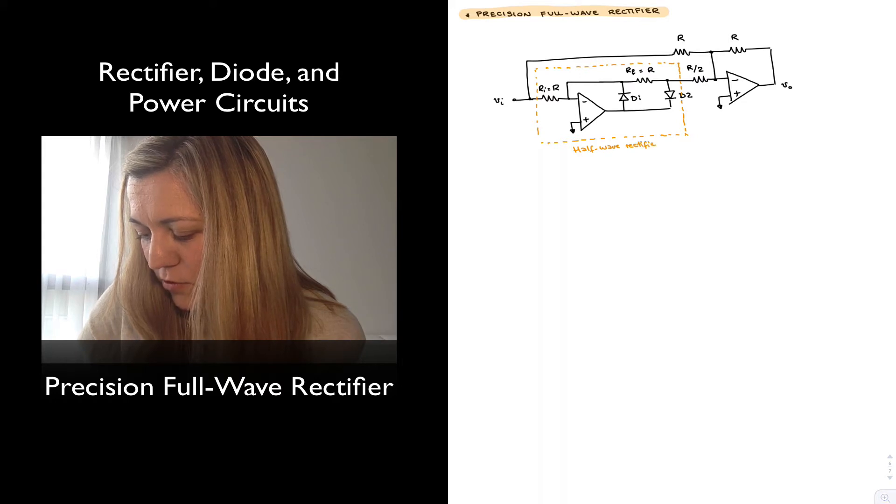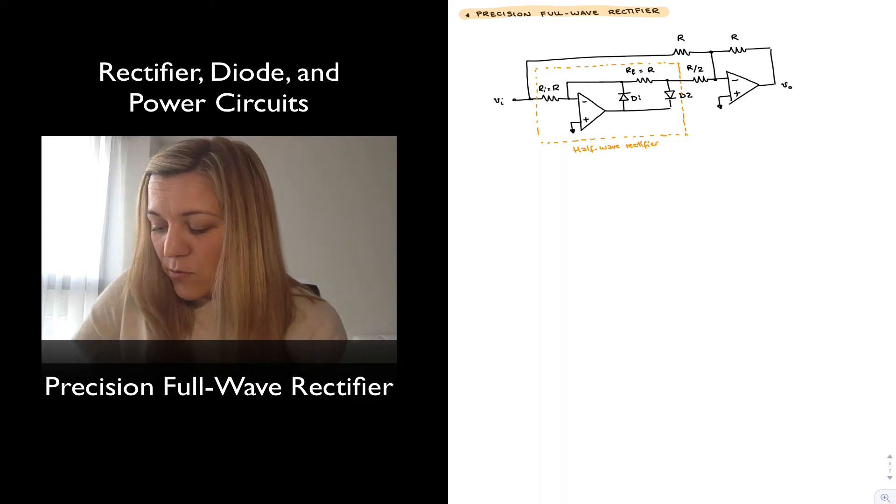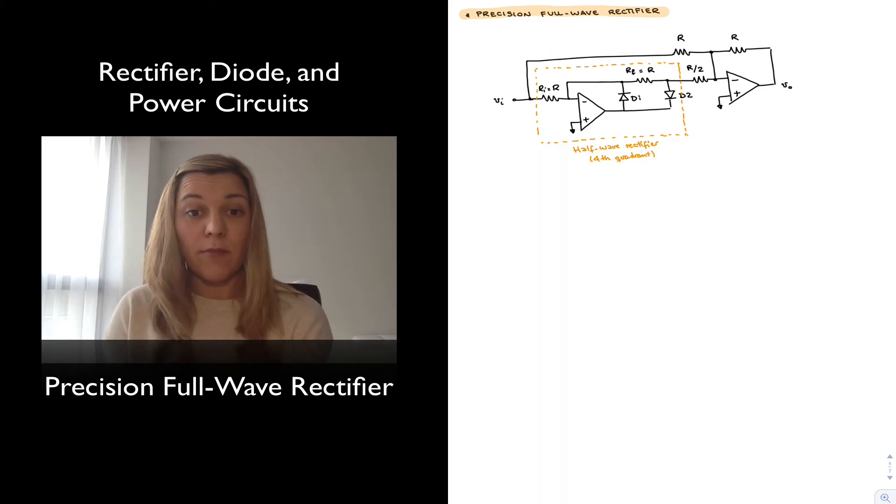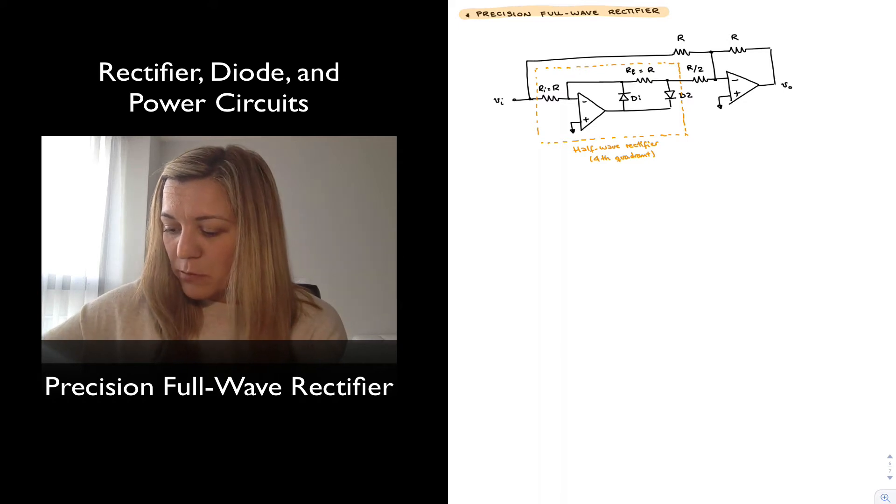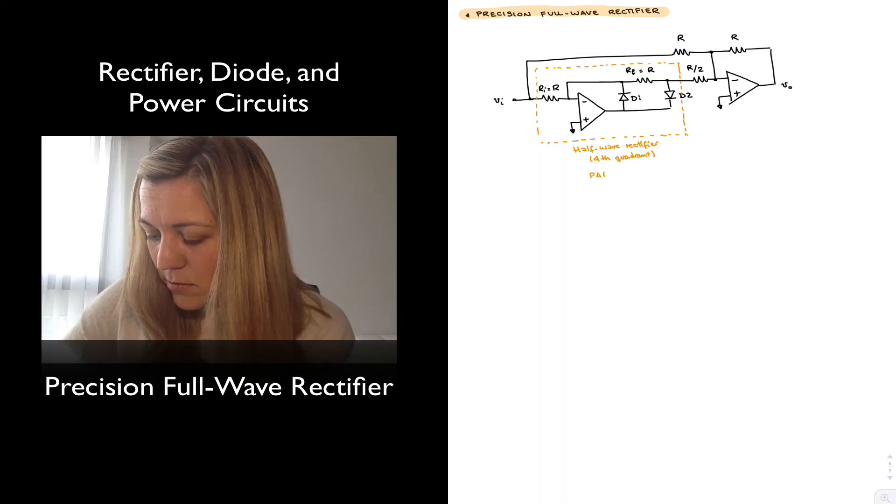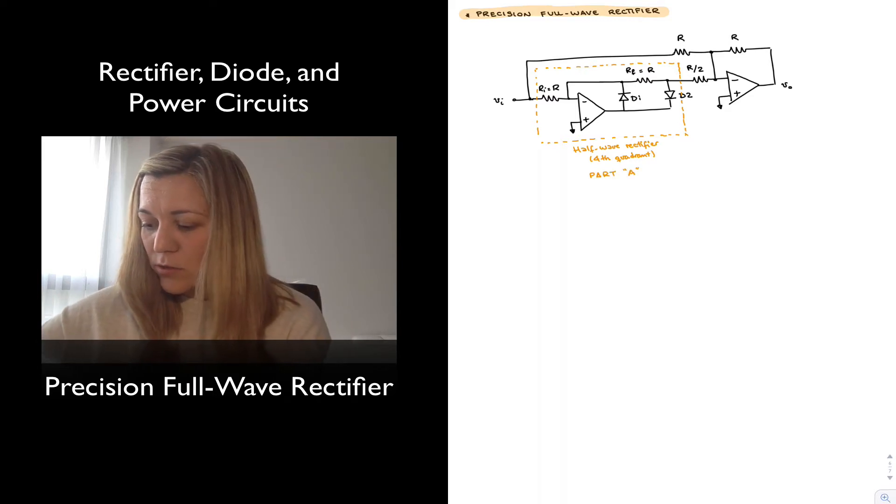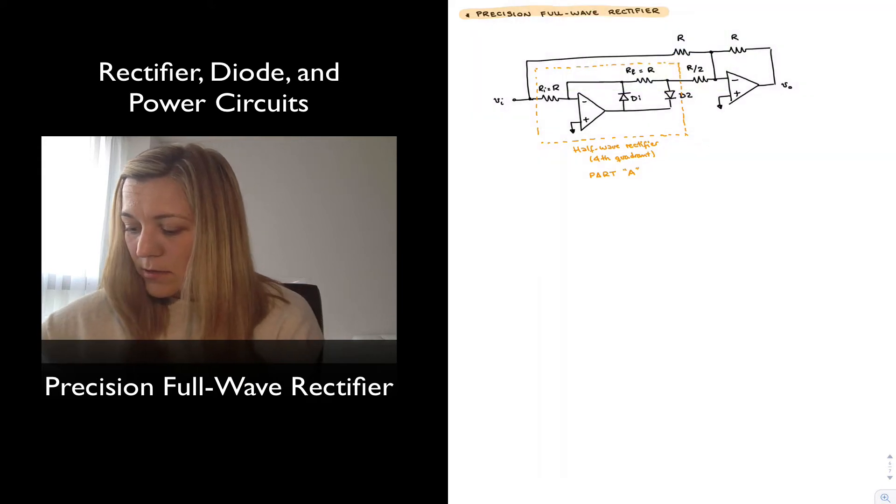Notice that because of the orientation of diodes, we're going to see that it is the one that is associated with the fourth quadrant, meaning the output is proportional to the input in the fourth quadrant and it's equal to zero for negative values of input. And then the second part, so I will call this part A.